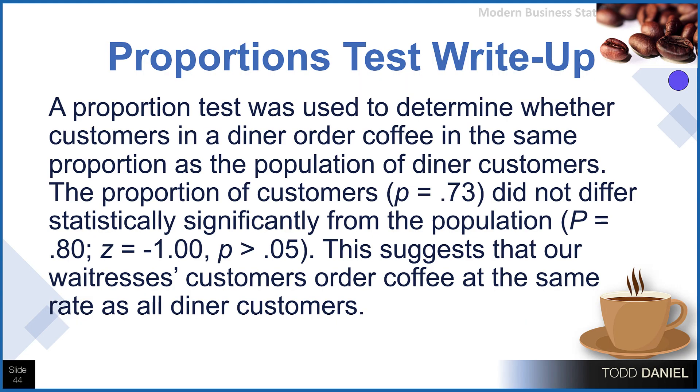And this is how we would write that up in our APA style for our write-up. A proportion test was used to determine whether customers in a diner order coffee in the same proportion as the population of diner customers. The proportion of customers, 0.73, did not differ statistically significantly from the population, with a probability of 0.80, z of negative 1, p greater than 0.05. This suggests that our waitresses customers order coffee at the same rate as all other diner customers.